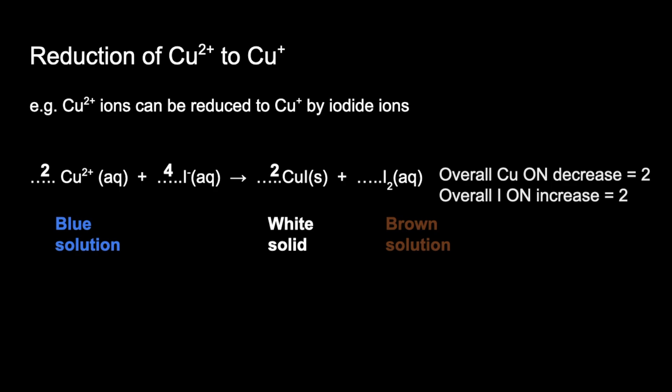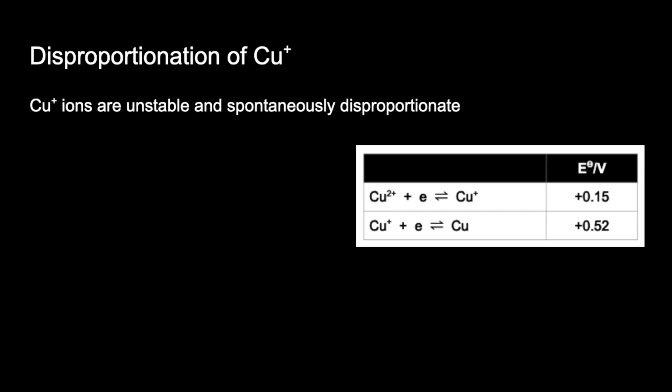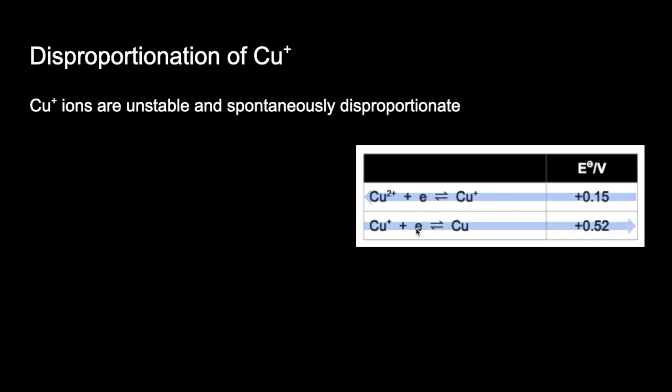Finally, the disproportionation of copper 1+. The supplied information is that Cu⁺ ions are unstable and spontaneously disproportionate, along with electropotential data. The second system is more positive, so it runs forwards and the top one runs backwards. The electrons are the same in both, so we simply add them together and tidy up to get the disproportionation equation.